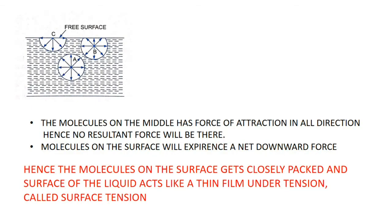Molecules in the middle of a liquid have forces of attraction in all directions, so there is no resultant force. However, molecules on the surface experience a net downward force because they are surrounded by neighboring water molecules only on one side, not in the upward direction. Due to this downward force, surface molecules get closely packed and the surface acts like a thin film under tension — this is called surface tension.